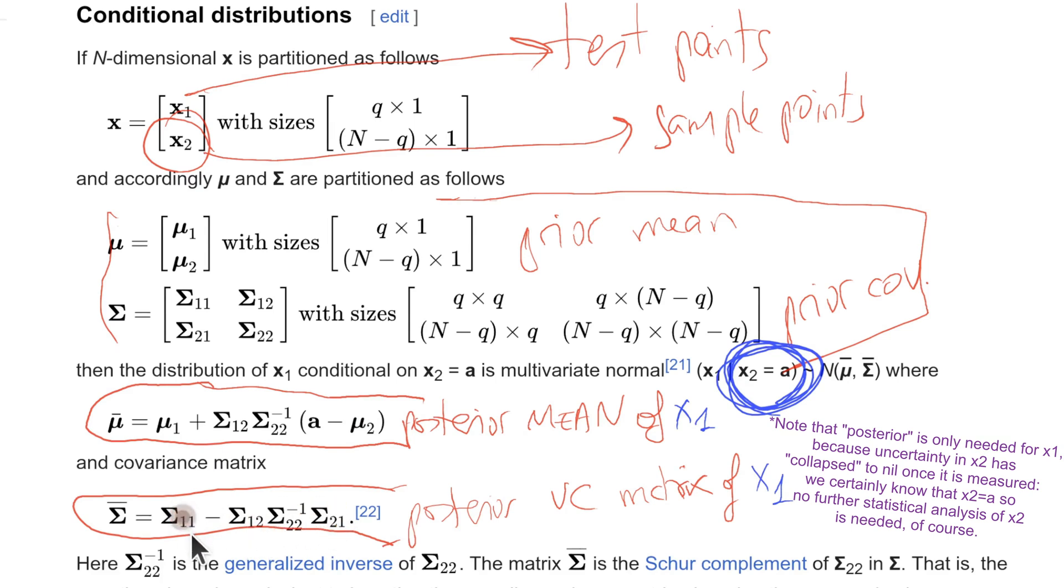Prior was sigma 1,1, and then covariance times inverse of information variance times covariance transposed is the posterior variance. This is a well-known formula, widely used in normal distributions. The detailed proof is elsewhere.